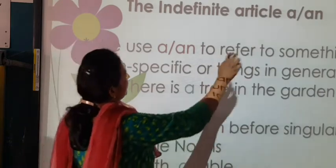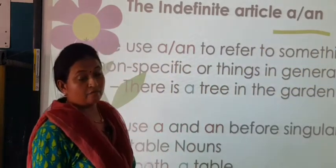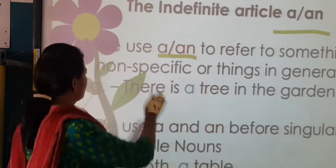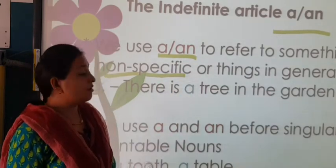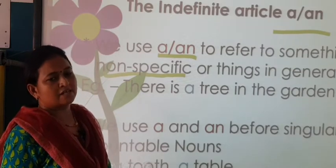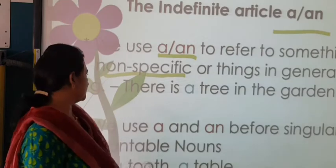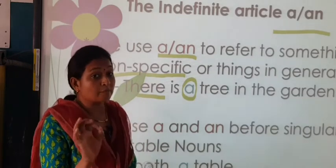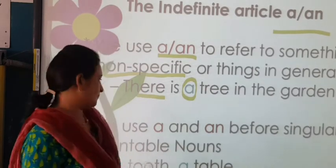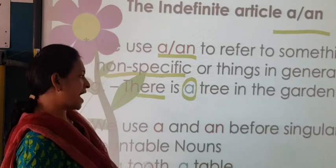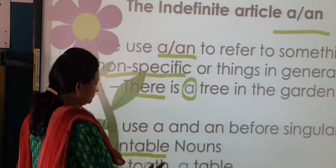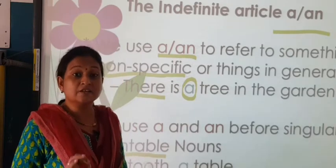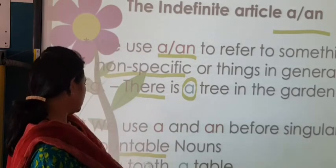The indefinite article: 'a' or 'an'. When to use it? Use 'a' or 'an' to refer to something non-specific, or things in general. When it is not specific, you will be using 'a' or 'an'. Write the definition with an example: 'There is a tree in the garden.' 'A tree' means I am not speaking about that specific tree — it could be any tree. We use 'a' and 'an' before a singular countable noun — for example, 'a table'.